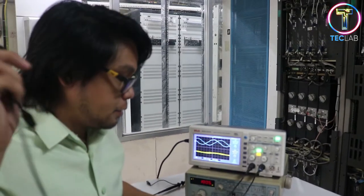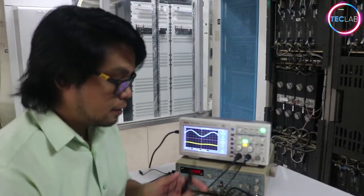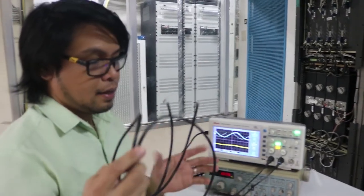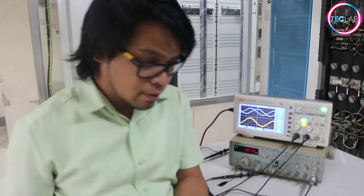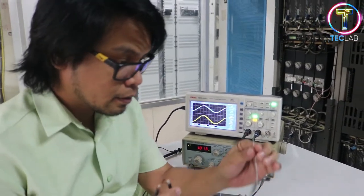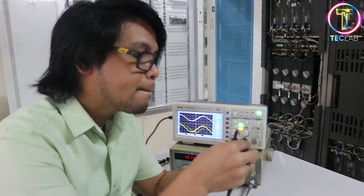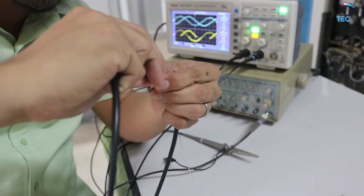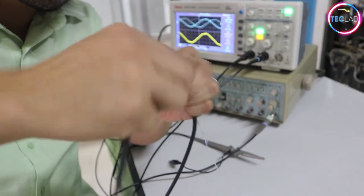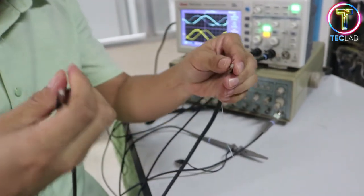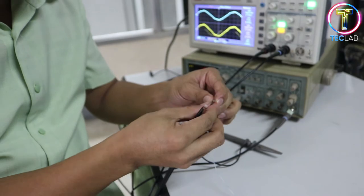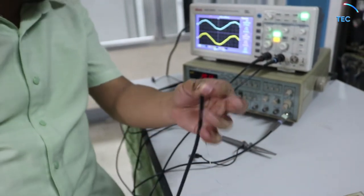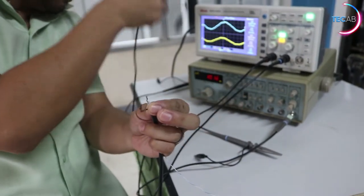So we're going to connect this into a series. Then we're going to connect our RG58 on this, so this is the input area, so we're going to just twist this one and connect this to your channel 1.